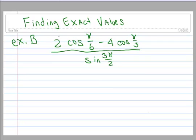Finding exact values. So we've got 2 times the cosine of pi over 6 minus 4 times the cosine of pi over 3, all over the sine of 3 pi over 2.